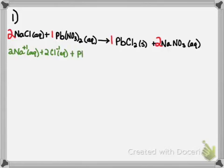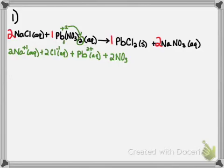Moving on to lead nitrate, we only have 1 lead, and each lead has a charge of plus 2. Remember, lead is a transition metal, so to figure out the charge we look at the formula. The 2 subscript after nitrate means lead had to have been a plus 2 charge in order for the crisscross to give a subscript of 2 on nitrate. For nitrate, we have 2 of them. Since there is no subscript after Pb, we assume that's a 1, so working backwards, nitrate had to have been minus 1. You could also get that charge from your polyatomic ion sheet — either way is fine.